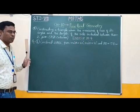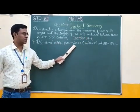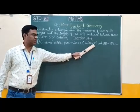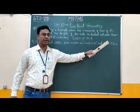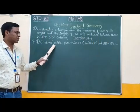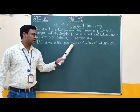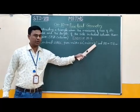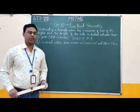Question number 1: Construct triangle ABC given measure angle A is equal to 60 degrees, measure angle B is equal to 30 degrees, and AB is equal to 5.8 cm. In this question we have to construct triangle ABC where measure of angle A is 60 degrees, measure of angle B is 30 degrees, and side AB is equal to 5.8 cm.